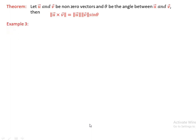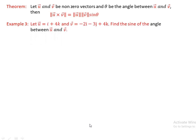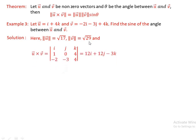Example: Let vector u = i plus 4k and vector v = minus 2i minus 3j plus 4k. Find the sine of the angle between u and v. The norm of u is the square root of (1² plus 0² plus 4²) = square root of 17. The norm of v is the square root of ((-2)² plus (-3)² plus 4²) = square root of 29. Computing u cross v from the determinant of [i, j, k; 1, 0, 4; -2, -3, 4] gives 12i plus 12j minus 3k.